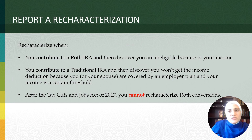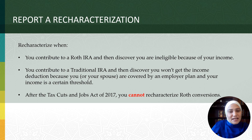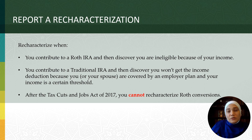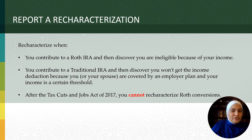The final mistake we are going to discuss is not reporting a recharacterization. Although recharacterization is not a taxable event, you must report it on your tax return. Here is when you might need one: let's say you decide to open a Roth IRA and make a maximum contribution of $6,500 for 2023 because you are under age 50. You make the full contribution in January, only to realize at the end of the year that you have made too much money to qualify for a Roth IRA. No worries — you can recharacterize your Roth IRA into a traditional IRA, but you will need to calculate the earnings attributed to that $6,500 contribution and recharacterize those too.